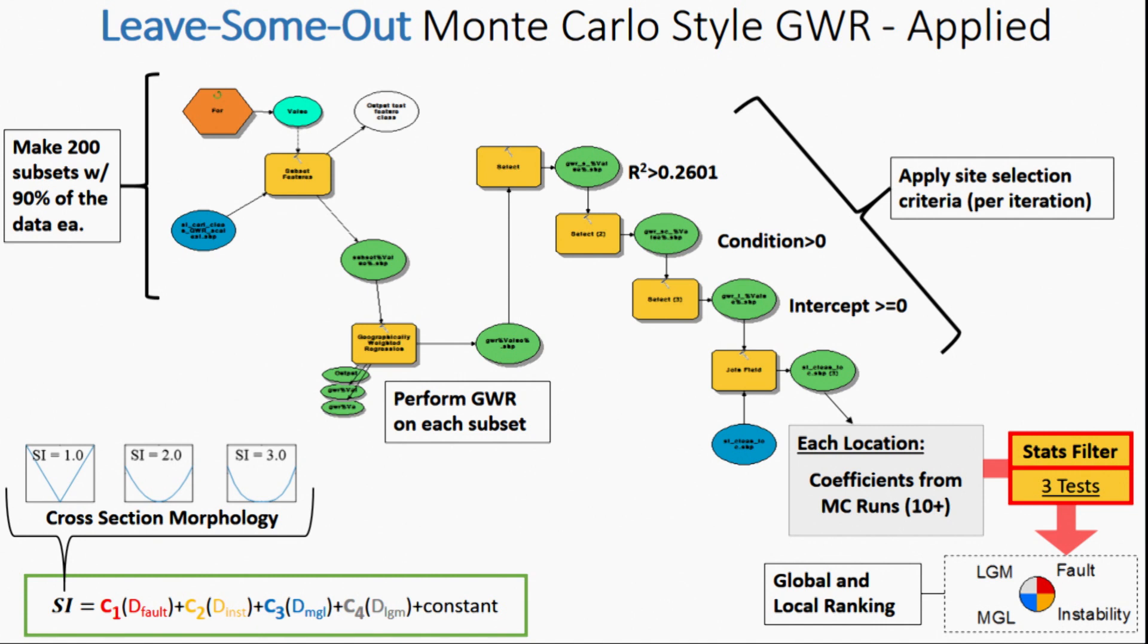What we did was make 200 subsets of the data, so we did 200 Monte Carlo runs. We created these subsets, performed the GWR on each subset, and then applied selection criteria. We wanted the R squared to be decent, the condition value to be not in error, and the intercept to be positive, which is required from the type of data we need.